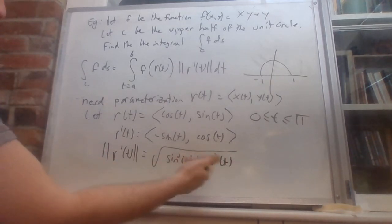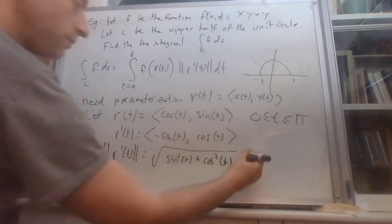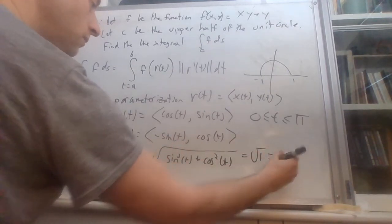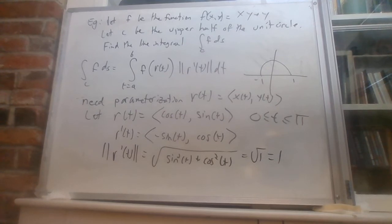Since we're squaring, the minus sign doesn't matter. The one trig identity I know simplifies to 1. So that's some of what we need.